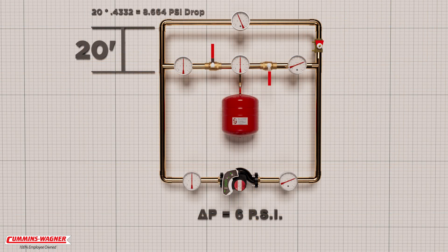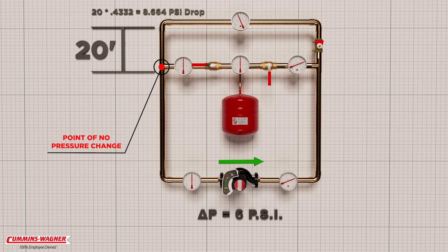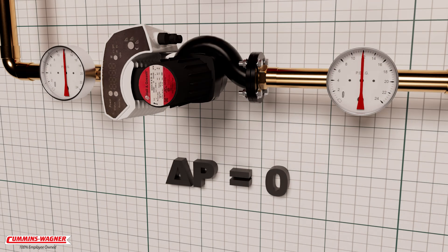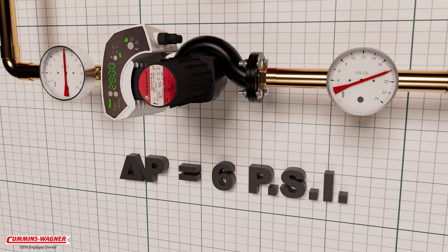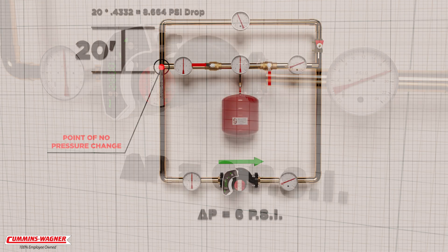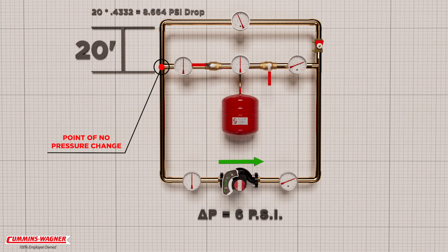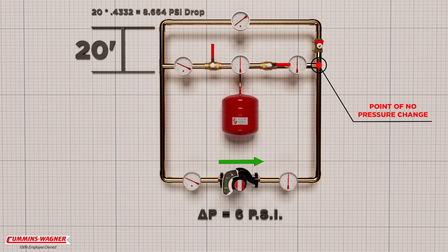Let's look at what happens when the expansion tank is open to the suction side of the circulator. In this correct scenario, we are pumping away from the expansion tank, or the point of no pressure change. As you can see, nothing really changes — the circulator is able to increase the discharge pressure and flow water to the top of the system. But if we open the other valve and move the point of no pressure change to the outlet of the circulator, we can see the immediate result.